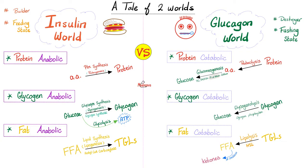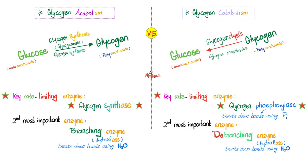In the insulin land, you build up big proteins from amino acids, big glycogen from glucose, big triglycerides from small free fatty acids. In the fasting state, you tear down big proteins into small amino acids, big glycogen into small glucose, big triglycerides into free fatty acids. The rate-limiting enzyme in glycogen synthesis is glycogen synthase — insulin is your man. The rate-limiting enzyme in glycogen breakdown, glycogenolysis, is glycogen phosphorylase — glucagon is your guy.